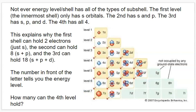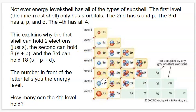Not every energy level has all of the subshells. The first level only has S subshells, the second level has S and P, the third has S, P, and D, and the fourth level has S, P, D, and F. This actually helps us explain why the first level can only hold two electrons — because it only has an S subshell, it can only fit two electrons. That's why there are only two electrons that can go in that most inner ring.